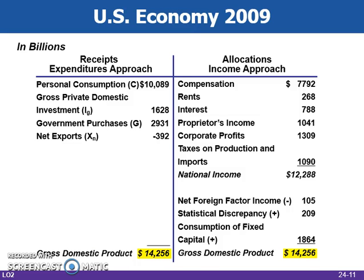This chart calculates GDP for 2009 in the United States by both the expenditures approach and the income approach. Note that both methods come to the same conclusion for that year.